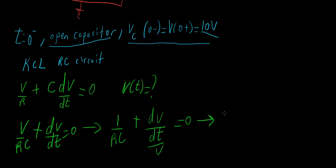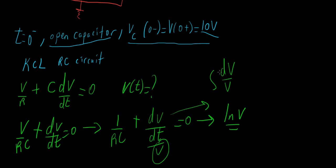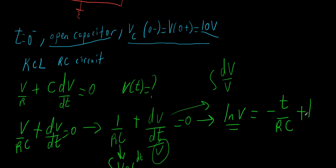We obviously need to integrate to get rid of this rate of change over time. We get the natural logarithm of V — because 1 over V, when you integrate using dV over V, gives you ln(V), which is the natural logarithm of V. So we get ln(V) equals minus T over RC, and integrating minus 1 over RC with respect to time gives T over RC plus a constant. We can call that constant X, so we don't confuse it with the capacitor C.